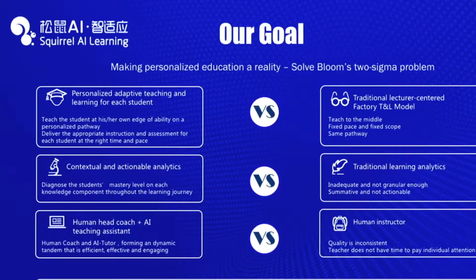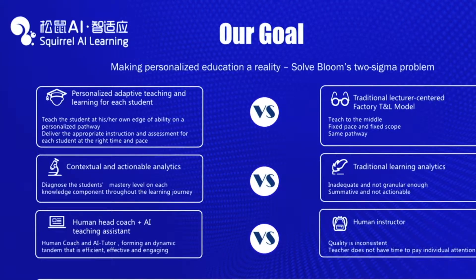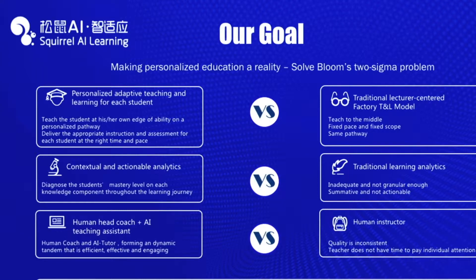The way we approach that — if you look at the right-hand side, that's the traditional way of teaching and learning, and the left-hand side is our way. We want to change from the factory model into a more one-on-one model. We want to change traditional learning analytics and how information is gathered about the learning process and make that much more actionable. We want the human instructor's role to change — we want personalized, adaptive, continuous learning; contextual and actionable analytics; and the human teacher to become the head coach, with AI becoming the assistant for that head coach.